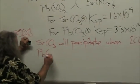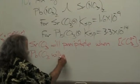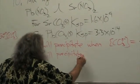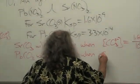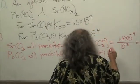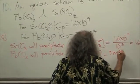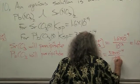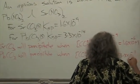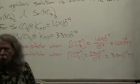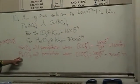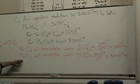Lead carbonate will precipitate when the carbonate concentration is equal to 3.3 times 10 to the minus 14 divided by 10 to the minus 3, which equals 3.3 times 10 to the minus 11 molar. This confirms what we thought beforehand — lead carbonate, being less soluble, is going to be the first thing to precipitate out.